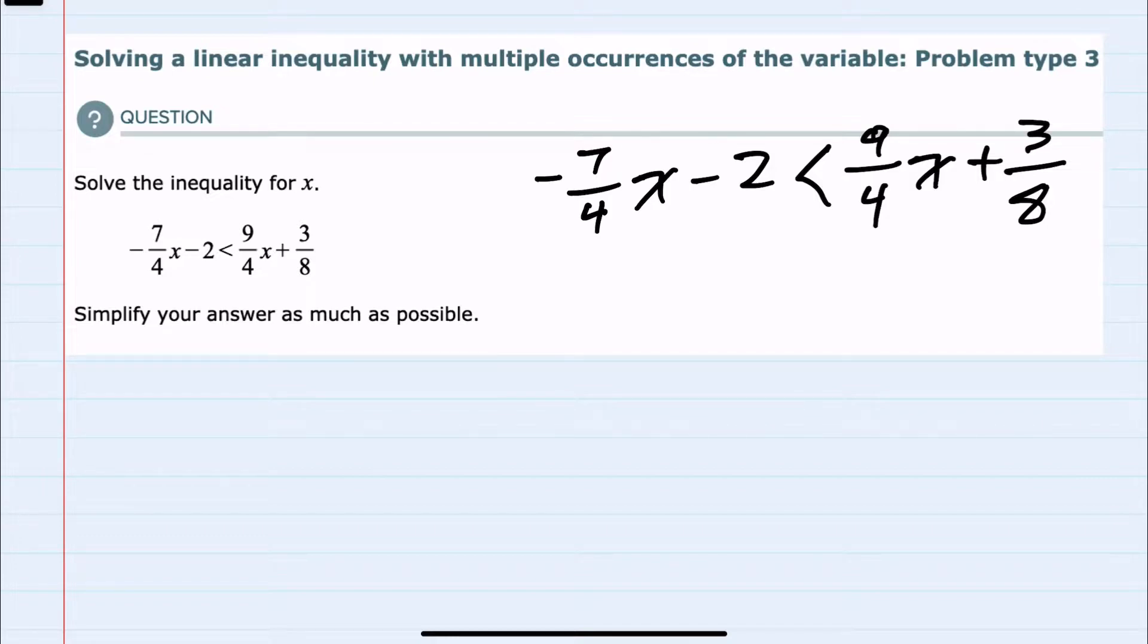To see what that looks like, our lowest common denominator here—we have three denominators: 4, 4, and 8. So 8 is our lowest common denominator. I would want to multiply everything on the left-hand side by 8 and everything on the right-hand side by 8.